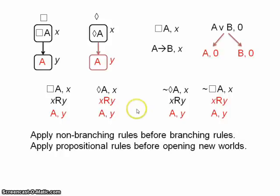As usual, you should apply non-branching rules before branching rules, and you should apply the propositional rules before opening new worlds. I'll just mention, I'm sure this is obvious to you, contradictions obtain when you have some formula A, X followed by not A, X, where X is the same number. If you have, say, A0 and not A1, that's not a contradiction. It's only a contradiction when they're the same number. Again, I'm sure that that's all quite obvious. Right then. Well, let's get on with it then. I think we should do some truth trees.